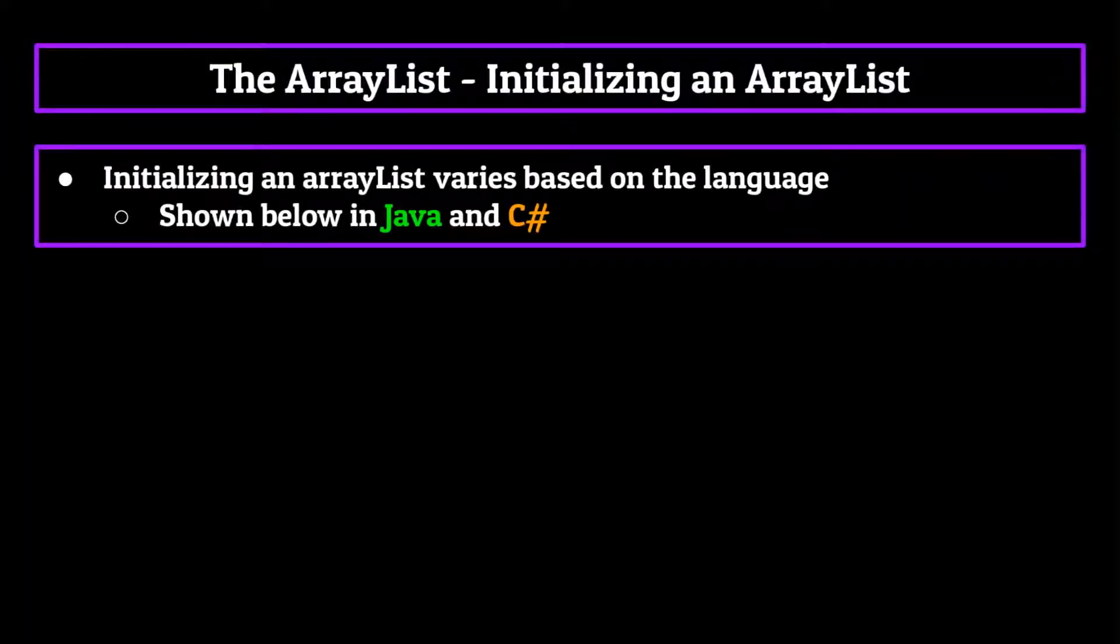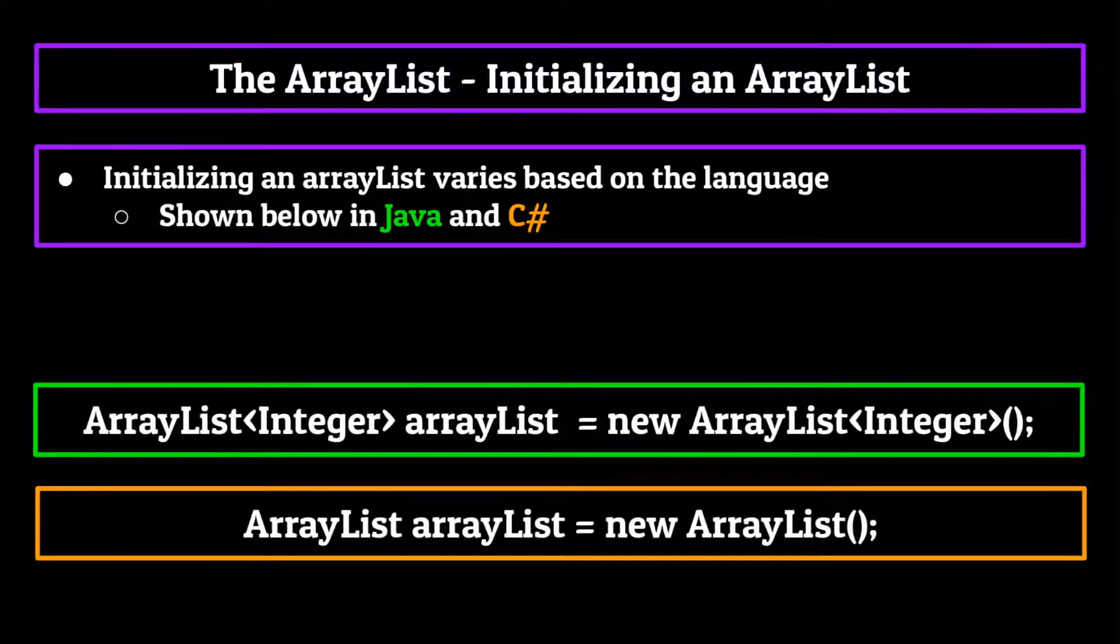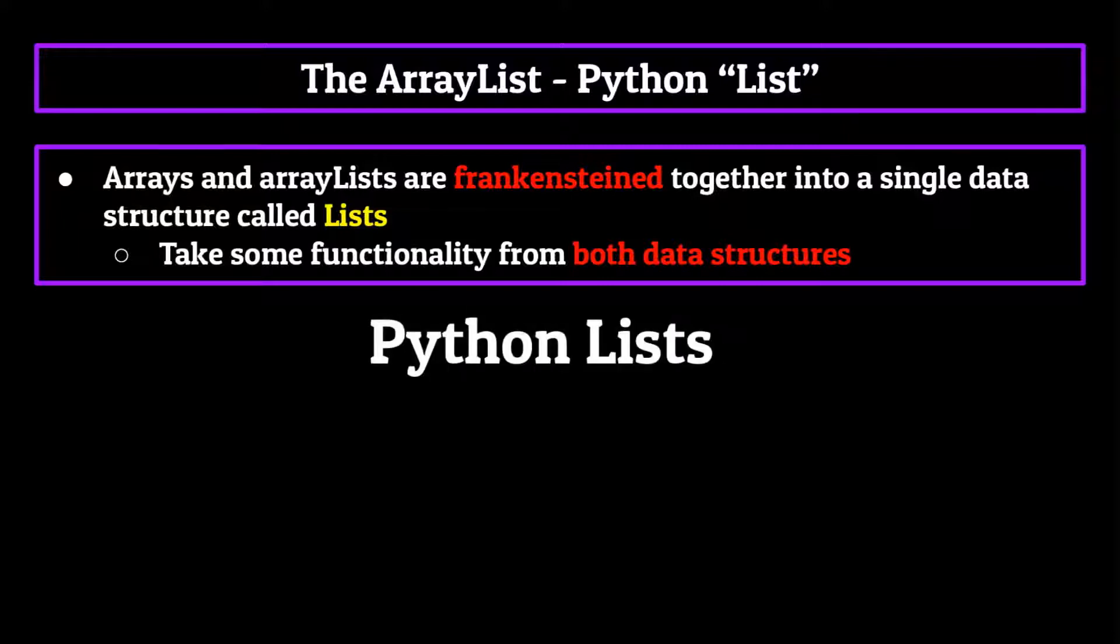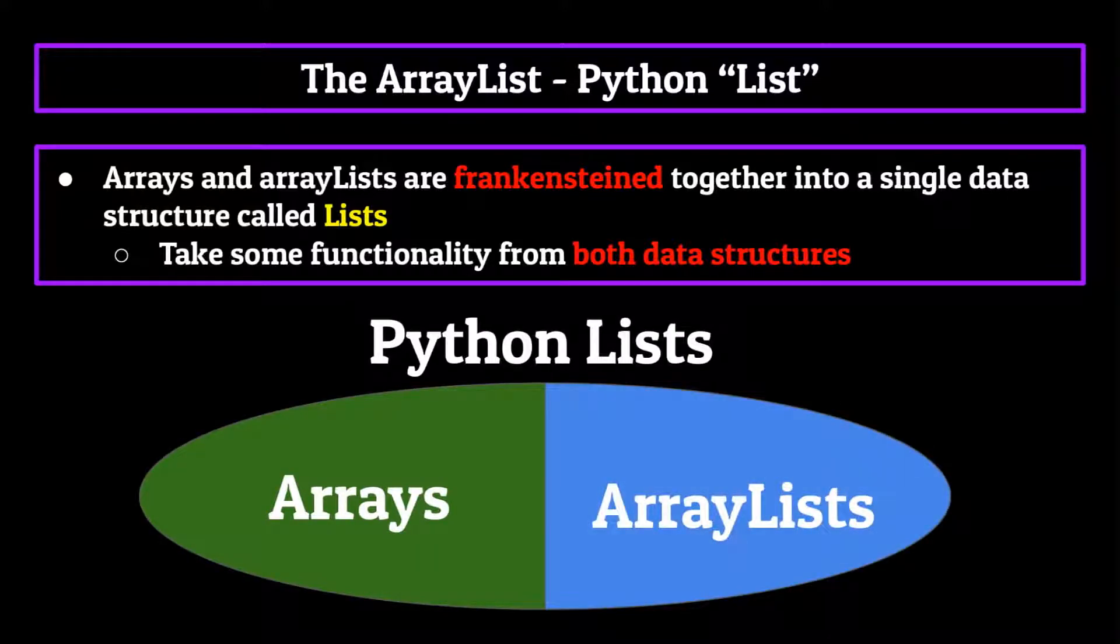Okay, so the next thing I want to do before we talk functionality is actually go over how to initialize an ArrayList. To do this again is going to vary based on which language you're using. So shown on your screen now are two different ways to do so, Java and C sharp. You may notice that there is no Python on the screen. And this is because the base version of Python, arrays and ArrayLists are actually not separate entities. They're sort of Frankensteined together into a single data structure called lists. Lists take some functionality from arrays and some from ArrayLists.